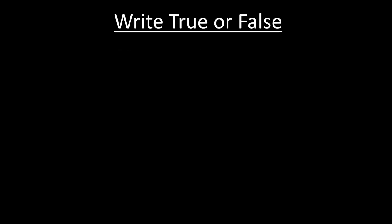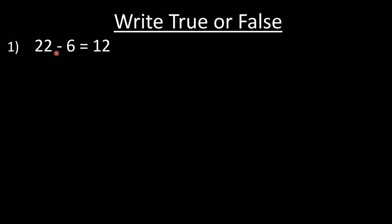True or False: if the statement is correct, write true; if wrong, write false. Question 1: 22 minus 6 is equal to 12. Keep 22 in mind and count backward 6 steps: 21, 20, 19, 18, 17, 16. Our answer should be 16, but it is given as 12, so this statement is false.